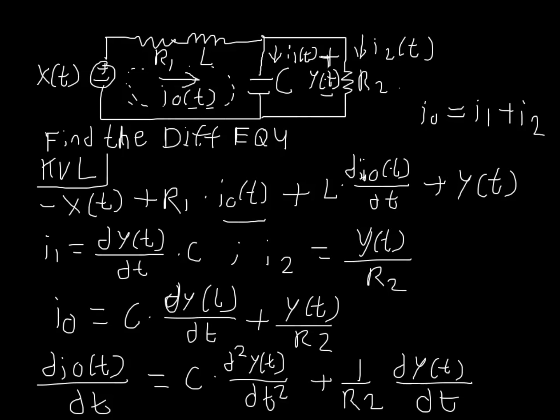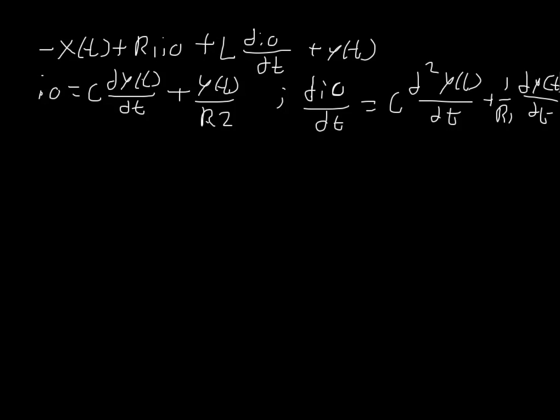And I'm going to draw this on the other page so we continue dealing with this. So here is all the equations we have already solved for. So really all we have to do is just plug them all into the KVL we have already found. So we know that it's negative x of t plus r times cdy dt plus yt over r2.